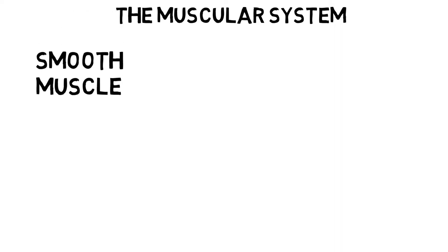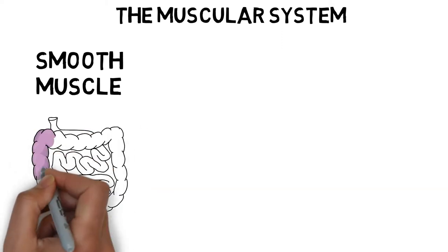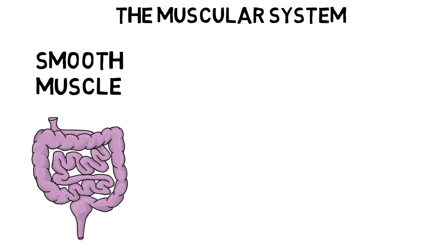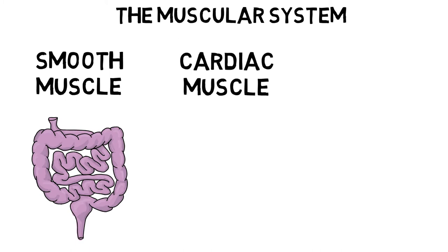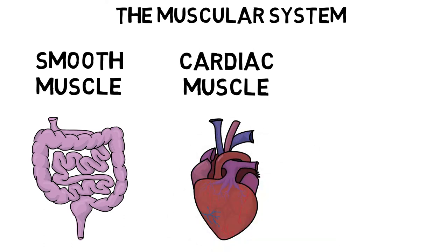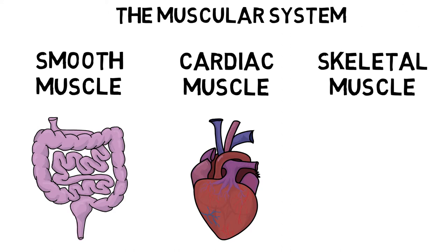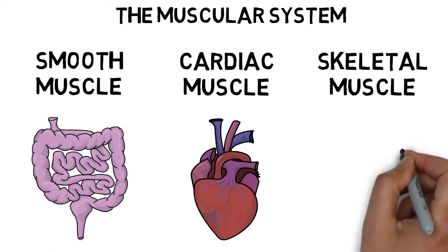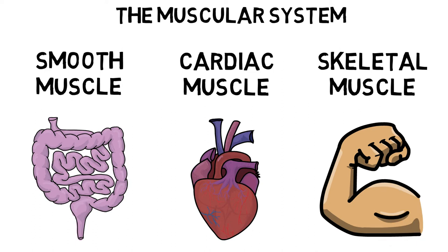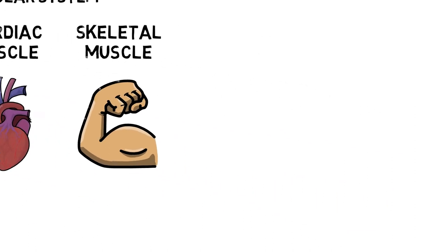We have three different types of muscles. Smooth muscles, which are located in the walls of hollow organs such as the digestive tract, and contract involuntarily. Cardiac muscles, which are located in the walls of the heart, and are once again contracted involuntarily. And skeletal muscle, which are located all over the body and attached to bones and other connective tissues. It is these muscles that we can contract voluntarily.